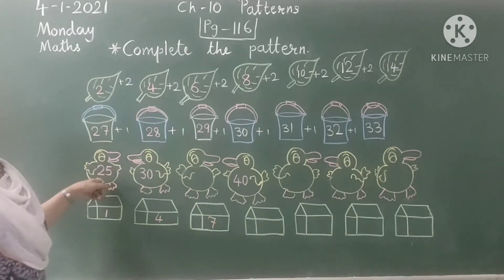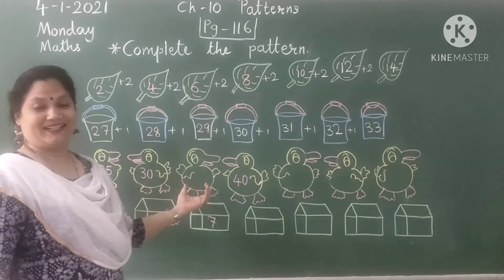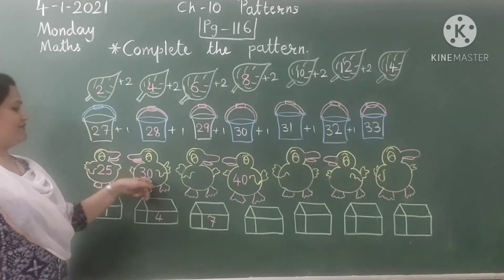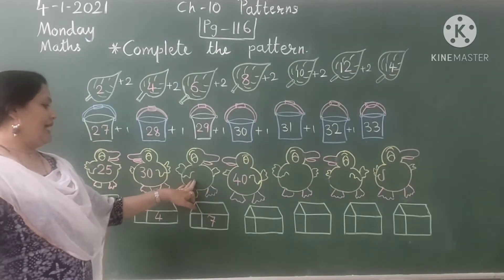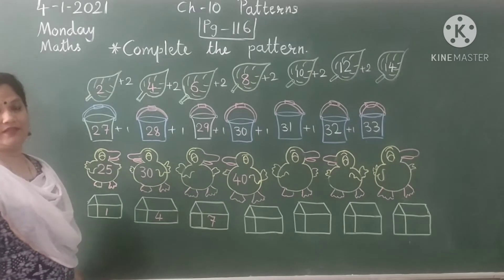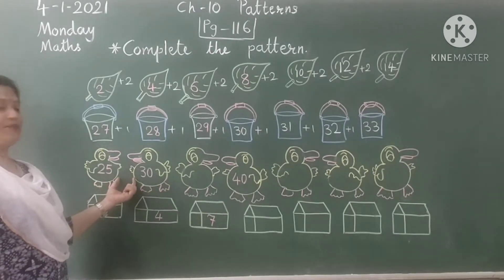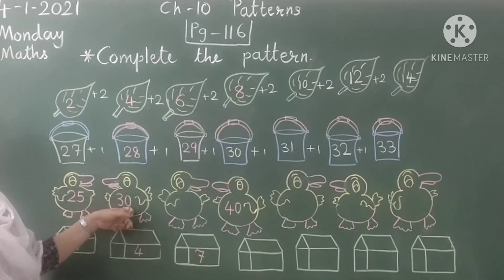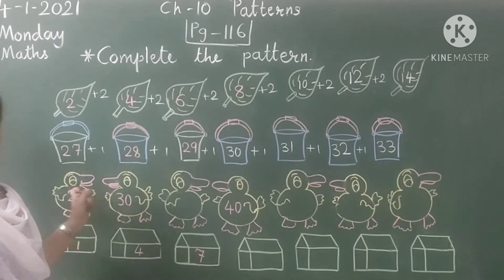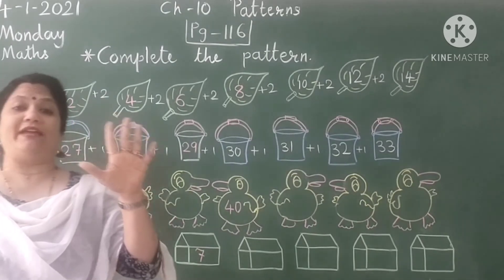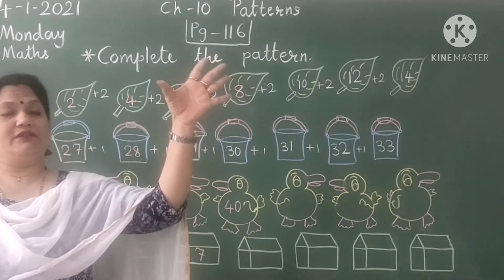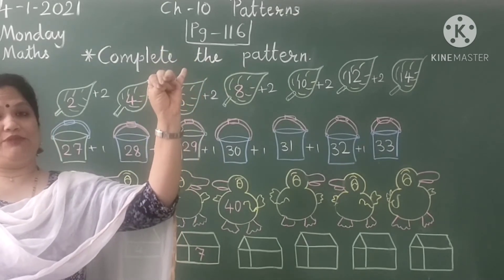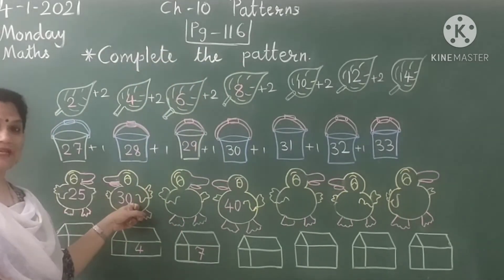Now look at here. These are beautiful ducklings, isn't it? 25, 30, then blank, then 40 is given. Children, just check first pattern. After 25, 30 is given. In 25, if we may add 5 numbers, after 25, 26, 27, 28, 29 and 30. See, 30 has come.